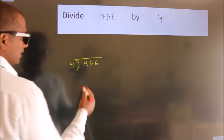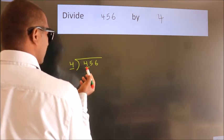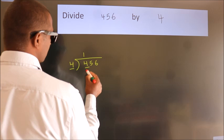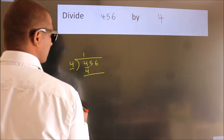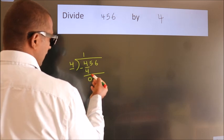Next. Here we have 4. Here 4. When do we get 4? In 4 table. 4 once, 4. Now we should subtract. We get 0. After this,